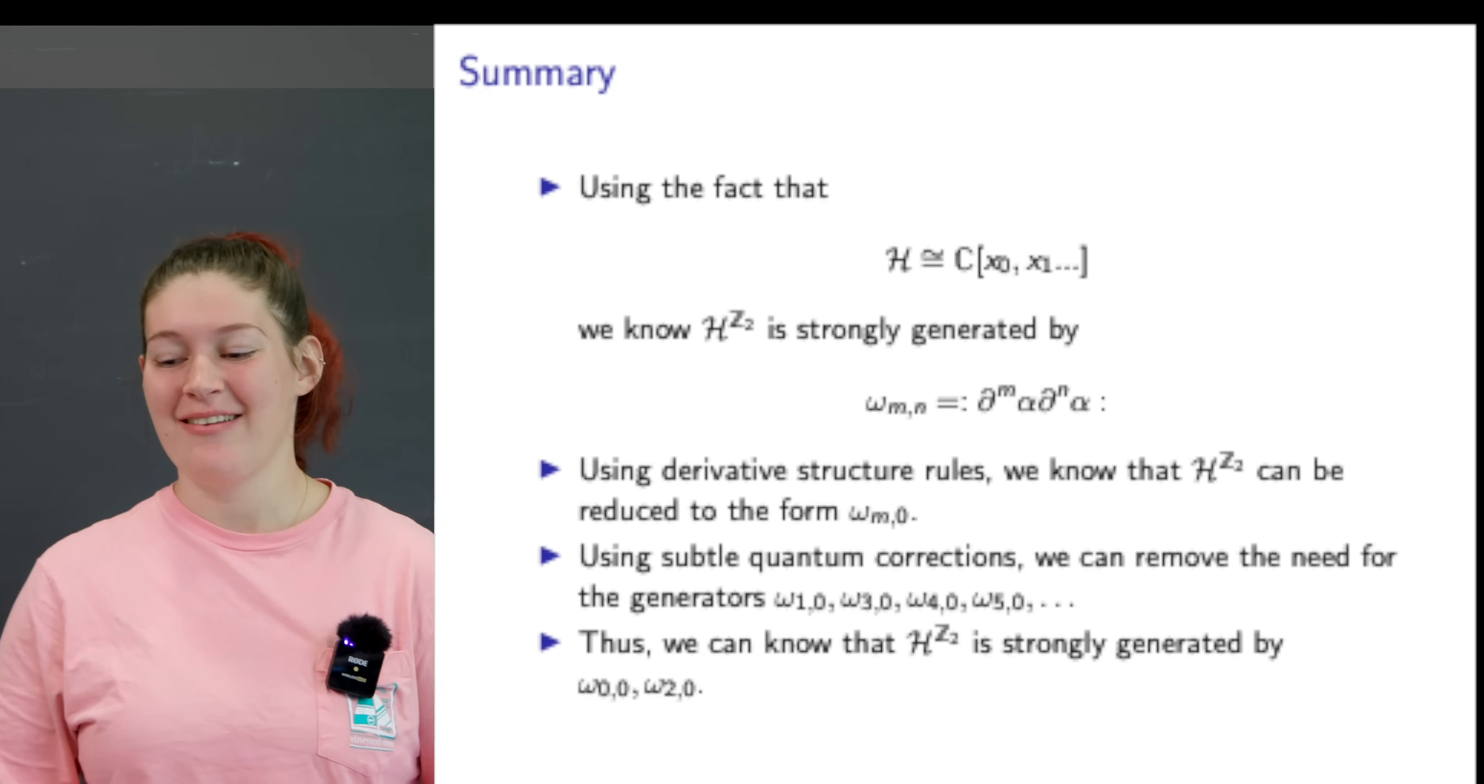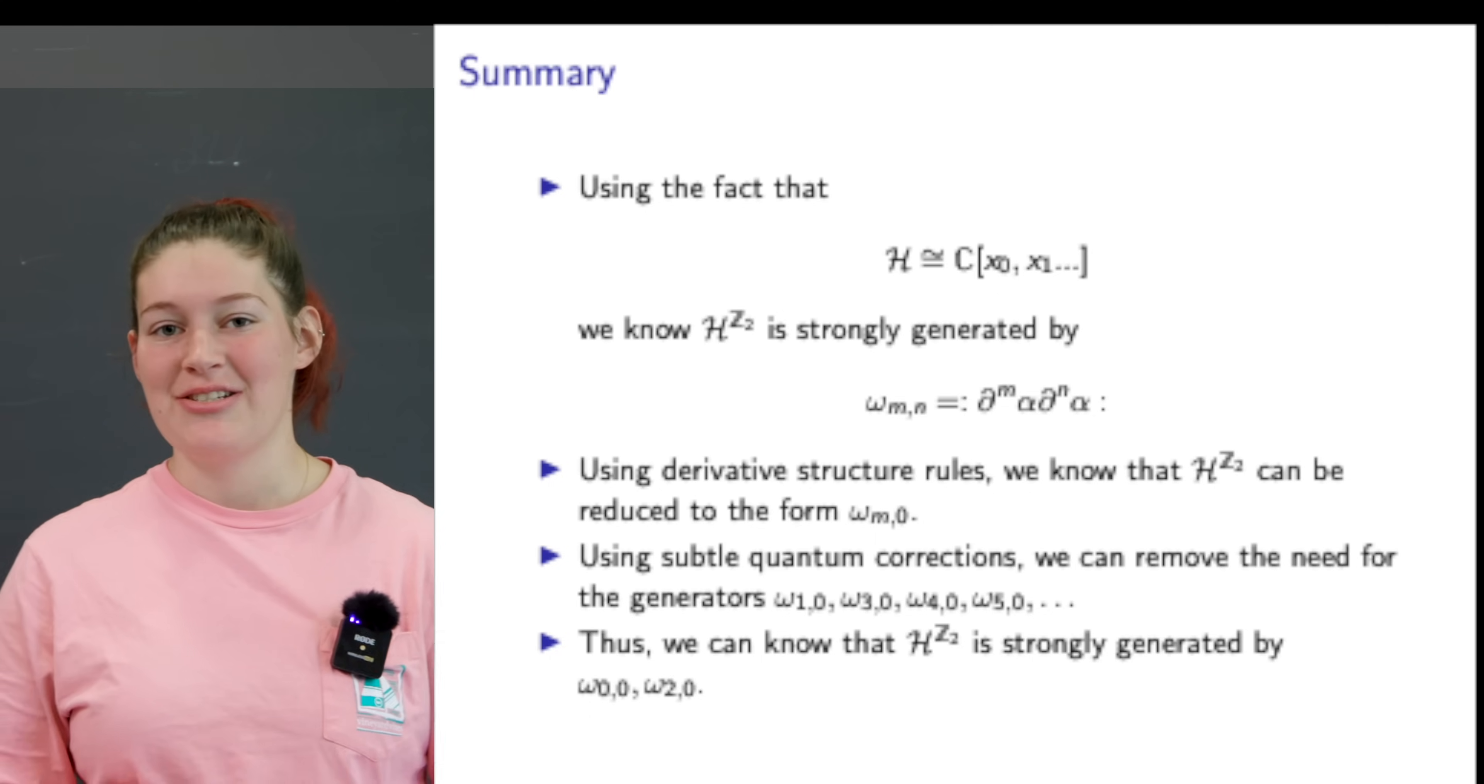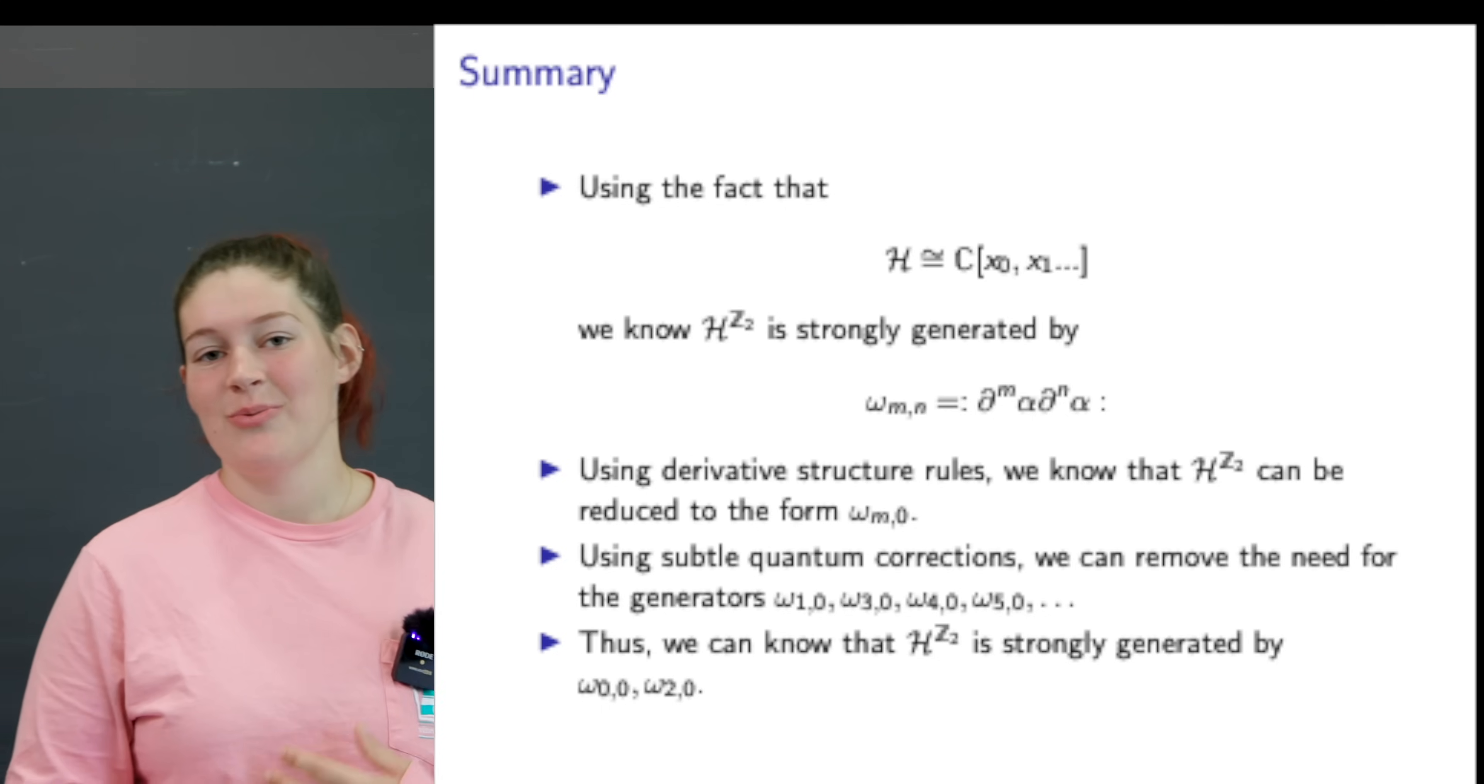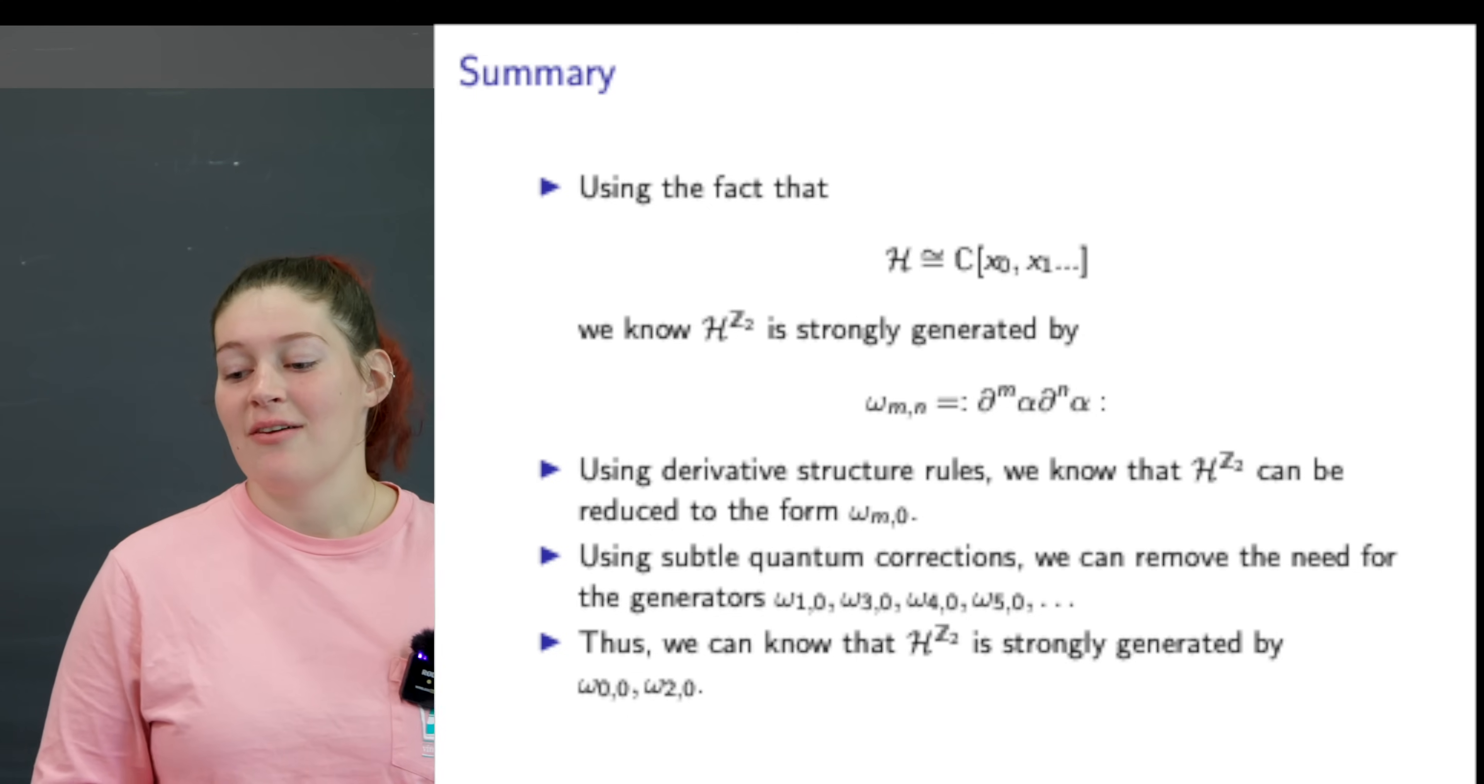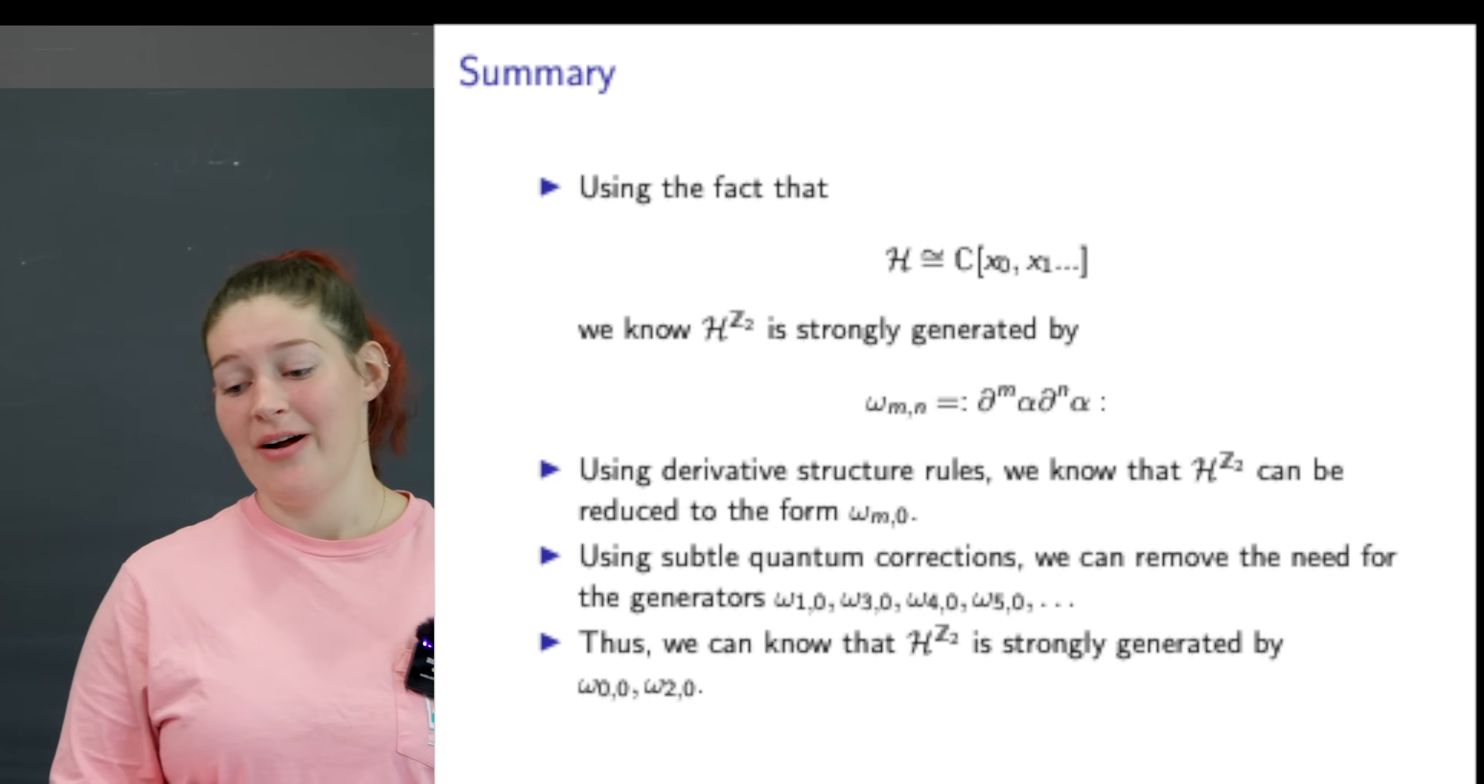In summary, using the fact that H is linearly isomorphic to the polynomial ring we know H^{Z2} is strongly generated by omega_{M,N} where it's equal to the normally ordered product of the Mth derivative of alpha times the Nth derivative of alpha. Using derivative structure rules we know that H^{Z2} can be reduced to the form omega_{M,0}. Using subtle quantum corrections we can remove the need for generators such as omega_{1,0}, omega_{3,0}, omega_{4,0} and so on. Thus we know that H^{Z2} is strongly generated by omega_{0,0} and omega_{2,0}.